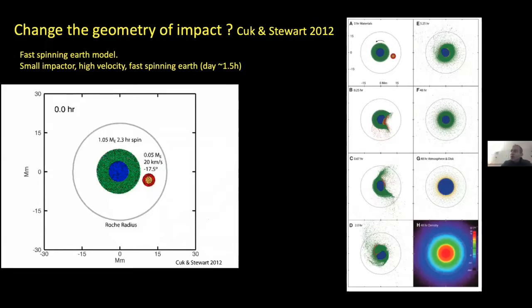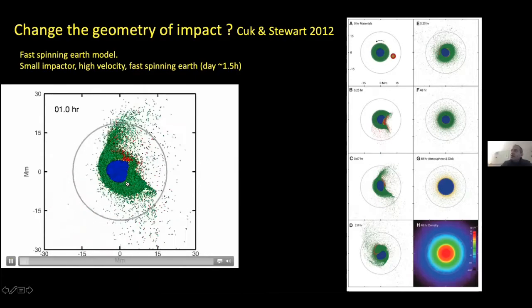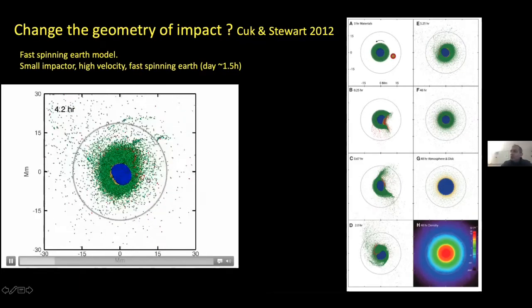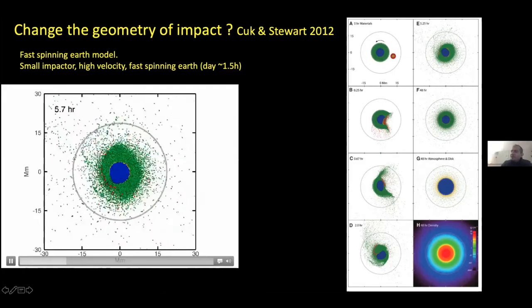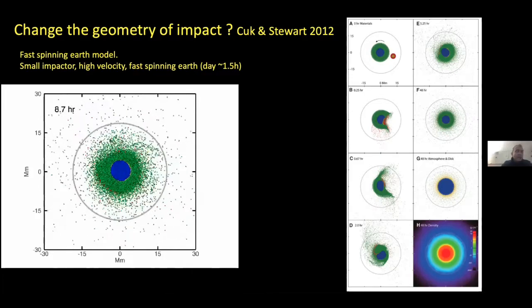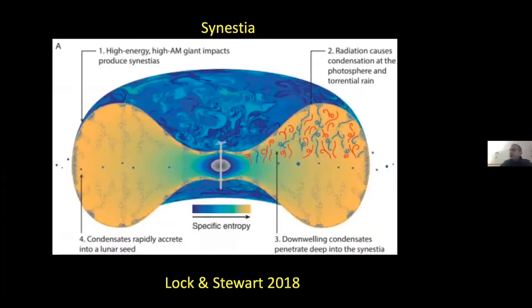This is why an alternative model was proposed — the synestia model — which invokes an impact on a fast-spinning Earth. This model, designed by Ćuk and Stewart in 2012, proposes an extremely energetic impact that spins up the Earth and puts most material into the proto-lunar disk. The disk is so hot that it is almost entirely fully vaporized. The result is what they call a synestia — not really a disk, but a large donut of completely vaporized Earth and impactor material.